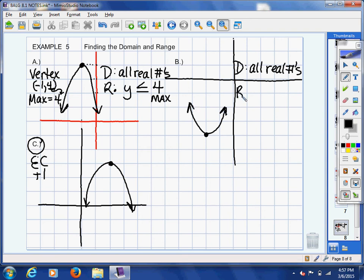Your range is tied to your vertex. So the first thing we need to do is identify this vertex. The vertex looks like it's at (-2, -4).